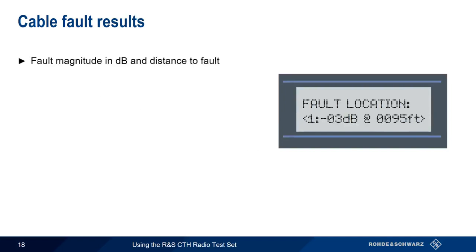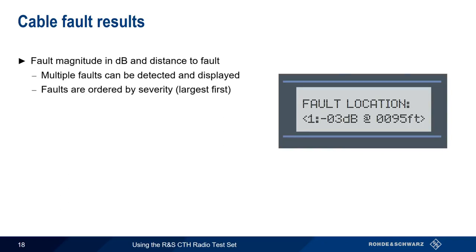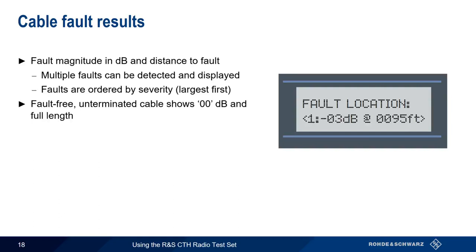The CTH provides both the magnitude of the fault in dB, as well as the distance of the fault for one or more faults. Multiple faults are numbered sequentially, ordered by severity — the first fault is the one with the strongest reflection. Note that a low-loss open or unconnected cable will reflect almost the full signal power at the open end, and in this case the measurement will display 00 dB and the full cable length.